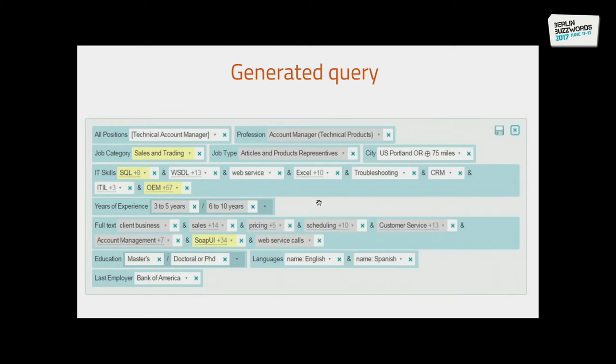We also have a system in which we can automatically generate a query from a vacancy. This usually results in a relatively large query with a lot of different dimensions, as you can see in this example. We have full-text terms, but we also have query parts related to education, language, and last employer. The colors of the query parts represent whether the item is a must-have, should-have, or could-have. Because usually when you search for people for a certain job, you don't really want somebody that fits all criteria exactly — you're never going to find such a perfect candidate. You just want somebody that matches most of your criteria, especially the more important ones.